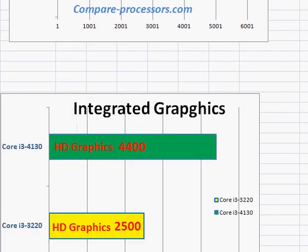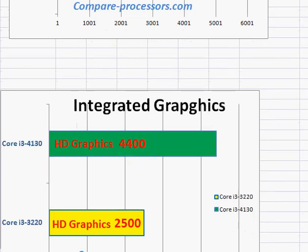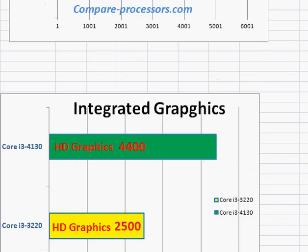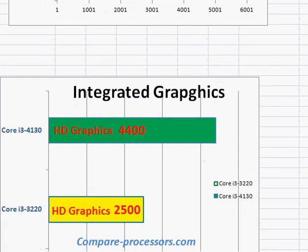The bigger difference is in the integrated graphics. The Core i3-4130 comes with HD Graphics 4400, while the i3-3220 comes with the older HD Graphics 2500. You can expect about a 1.5x performance improvement in the Core i3-4130's graphics.